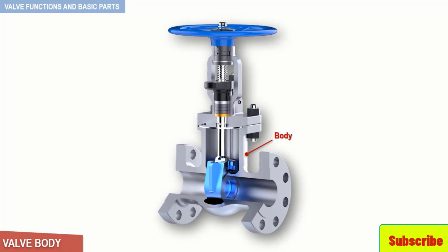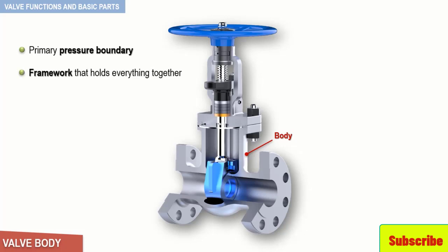The body of a valve, sometimes called the shell, is the primary pressure boundary of a valve. It serves as the principal element of a valve assembly because it is the framework that holds everything together. The body, as the first pressure boundary of a valve, resists fluid pressure loads from connecting piping.